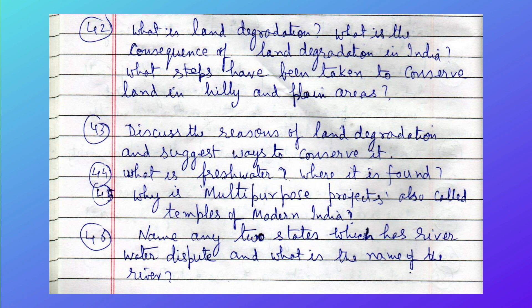What steps have been taken to conserve land in hilly and plain areas? Discuss the causes of land degradation and suggest ways to conserve it. What is freshwater and where is it found? Why are multi-purpose projects also called the temples of modern India?